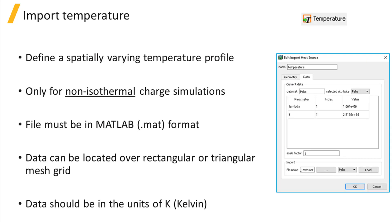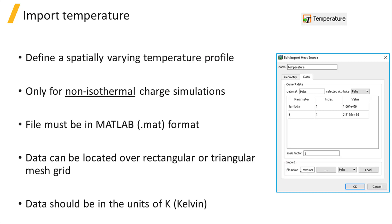The Temperature Import Source object allows the definition of a spatially varying temperature profile within the simulation. This object can only be used in non-isothermal charge simulations to account for the effect of temperature on material properties and device performance. The geometry settings are the same as the import generation source, and under the Data tab, the file containing the temperature data can be specified. The file must be in MATLAB format (.mat extension) and data can be located over a rectangular or finite element mesh grid. The unit for the imported temperature data should be degrees Kelvin.